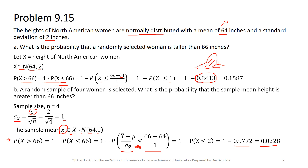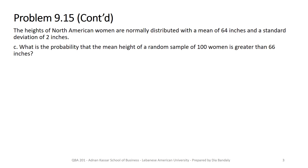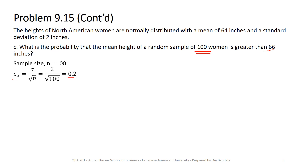For part c, we are now selecting a sample of 100 women — a very large sample size. The question is: what is the probability that the mean height of these 100 women is greater than 66 inches? The mean doesn't change, but the standard deviation of x-bar changes drastically — now it's 0.2, compared to 1 in the previous part. That's a very small standard deviation, meaning very high concentration around the mean.